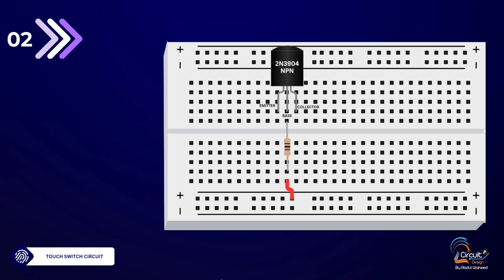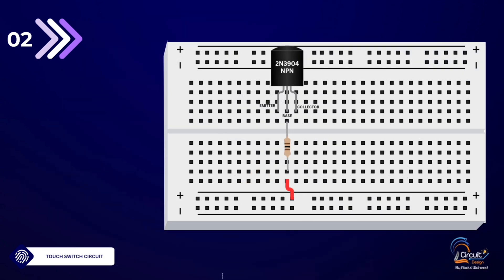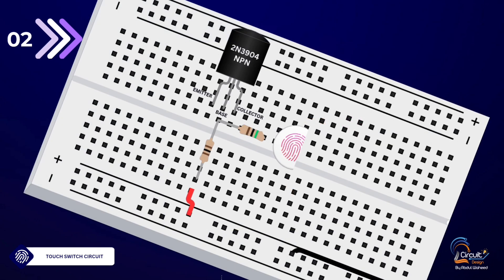Step 2: Connecting the resistors. Connect the 10K ohm resistor between the base (B) of the transistor and the positive rail (VCC) of the breadboard. Connect the 1M ohm resistor between the base (B) of the transistor and one terminal of the touch plate.